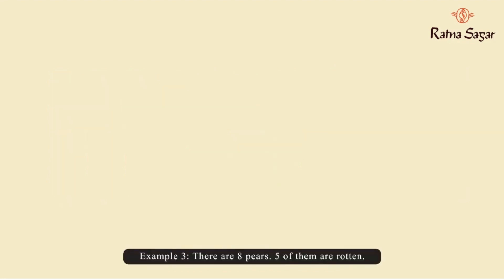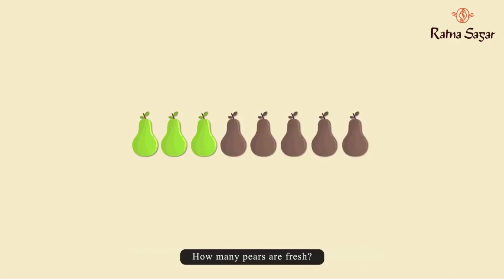Example 3. There are eight pears. Five of them are rotten. How many pears are fresh?